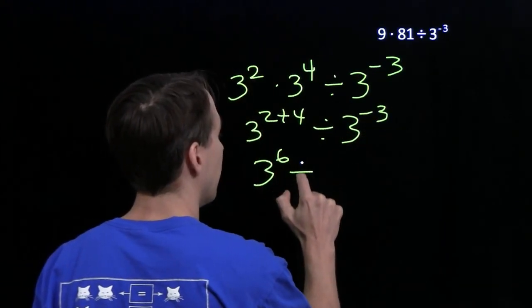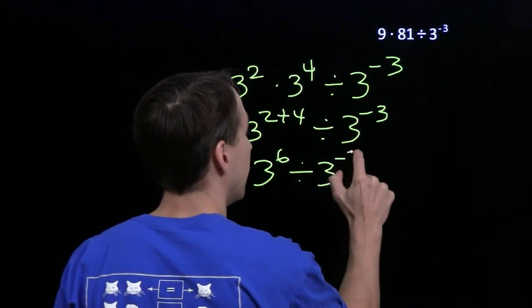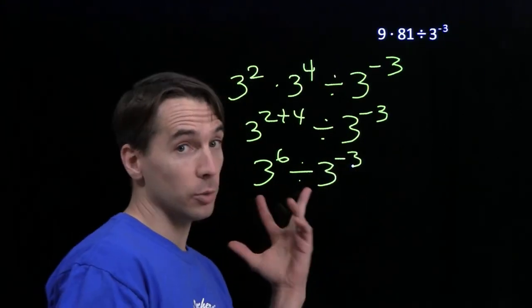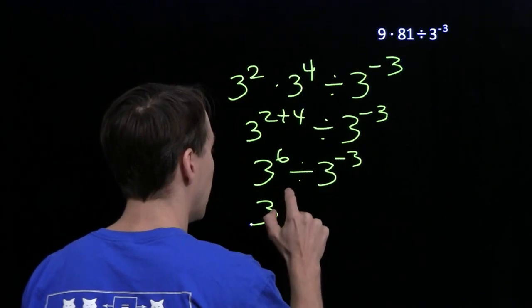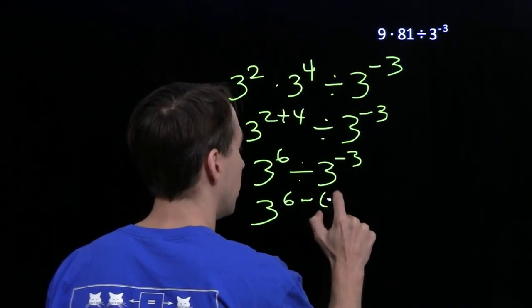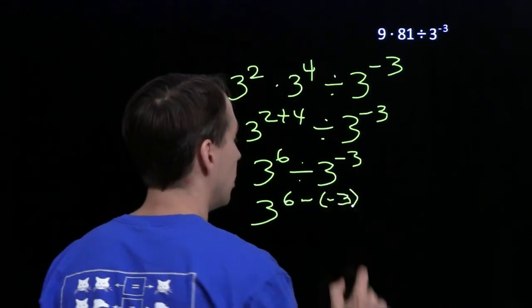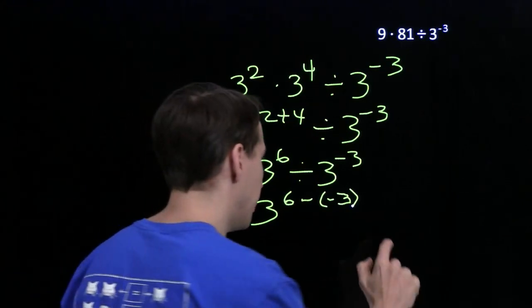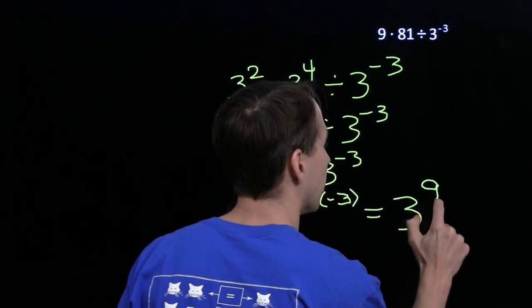We have 3 to the 6th divided by 3 to the negative 3. And now we have a quotient of powers with the same base. We know what to do there. We subtract the exponents. 6 minus the negative 3, that's 9. So this comes out to be 3 to the 9th.